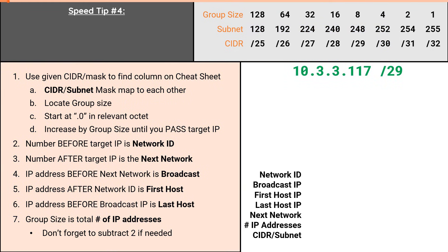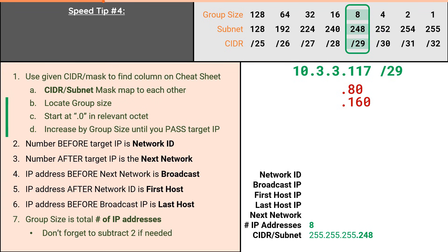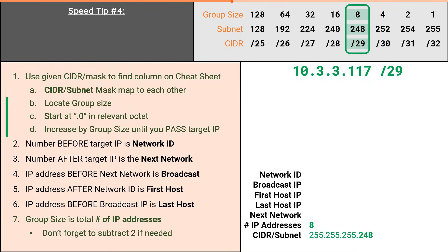Which brings us to our final speed tip and problem. As with any other problem, the CIDR reveals the column, and the column reveals the subnet mask and number of IP addresses. Again, we absolutely could solve this the normal way by starting at .0 and incrementing by the group size of 8 until we pass the target IP of .117, but that would take additional time. We could try speed tip number 1 and multiply the group size by 10 and then double it, but we have to be careful here. It may appear like we've successfully passed the target IP, but if we tried to continue from here we would get incorrect attributes. The increment we use to actually pass the target IP must be by the group size. Our group size was 8, but this particular increment was a jump of 80 IP addresses, so going to .160 takes us too far. Speed tip number 2 and 3 would allow us to start at .128, but that is already higher than .117, which brings us to speed tip number 4.